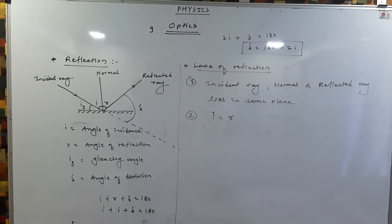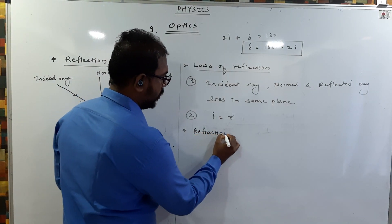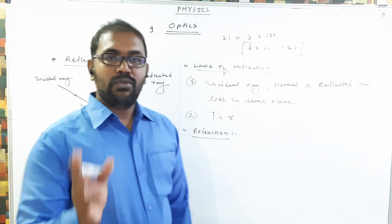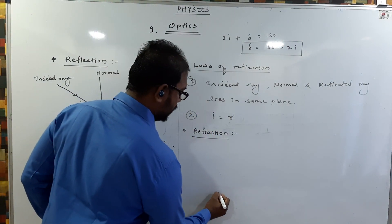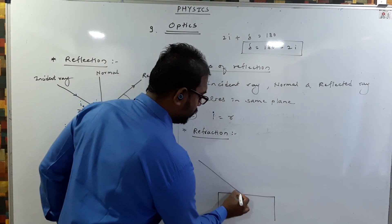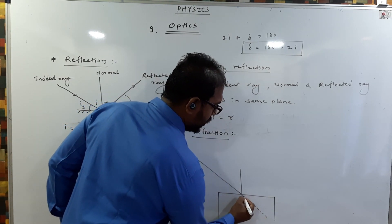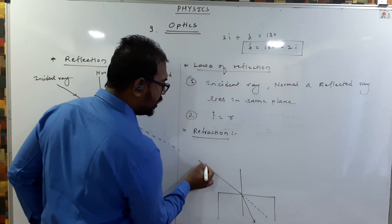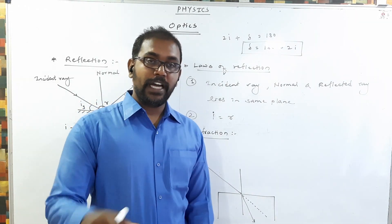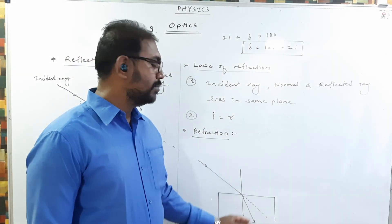Now we start refraction. What is refraction? In refraction we have to consider two mediums. For example, consider a glass medium. When light is incident on glass, instead of going in a straight line, it bends towards the normal. This is called refraction — refraction means the bending of a light ray when it travels from one medium to another medium.